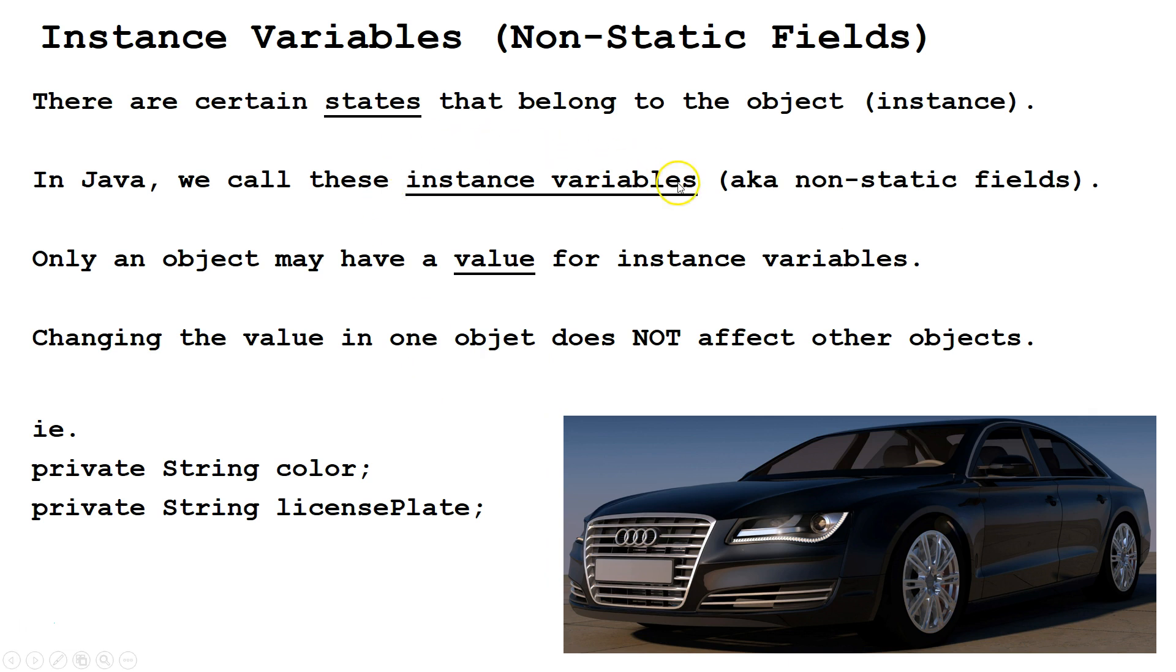So in Java, we call these instance variables, also known as non-static fields. Only an object may have a value for the instance variables. We can set out what the value will become in the class. And changing the values in one object does not affect other objects.